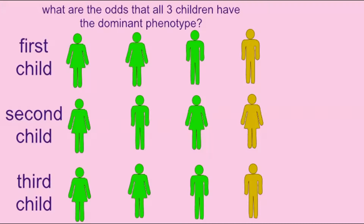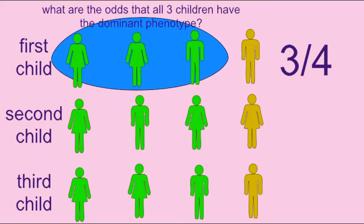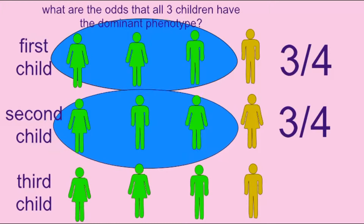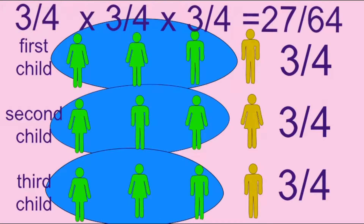If two carriers for a Mendelian recessive trait have three children, and one were to ask what are the odds that all three would possess the dominant trait, one would multiply three quarters — the odds that the first child possesses the dominant trait — by three quarters, the odds the second child will possess the dominant trait, by three quarters, the odds that the third child possesses the dominant trait. So the odds that all three will possess the dominant trait is 27 over 64.